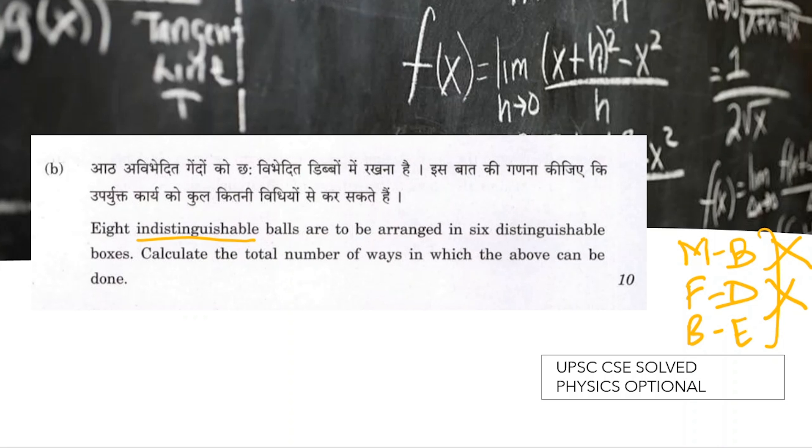We are given eight indistinguishable balls, which we can take as equivalent to eight indistinguishable particles. And there are six distinguishable boxes, which we can take as six energy levels.